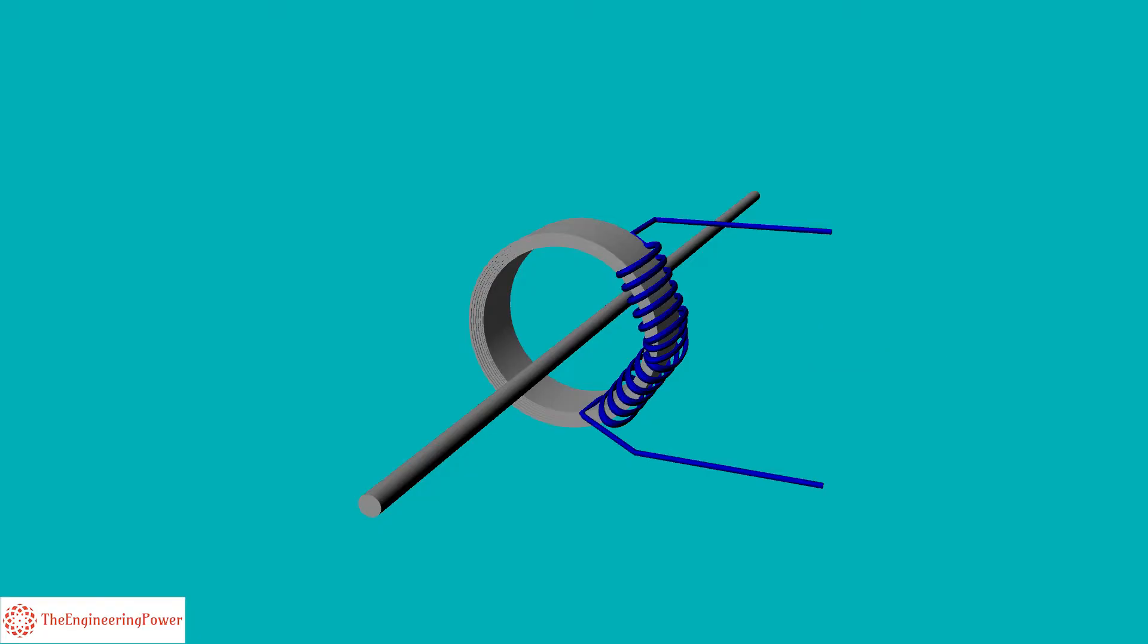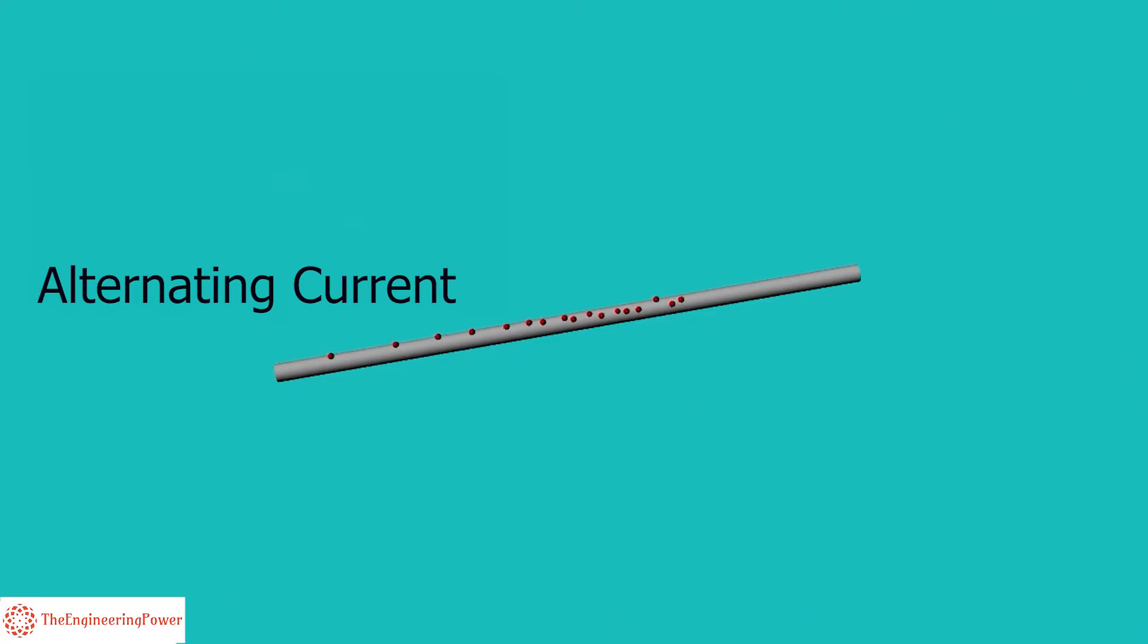Next we explain the working of a current transformer. The working principle of a CT is based on the law of electromagnetic induction. That is, when an alternating current passes through a conductor, a magnetic field is generated.